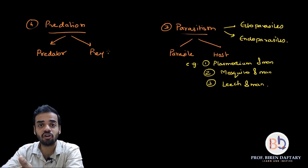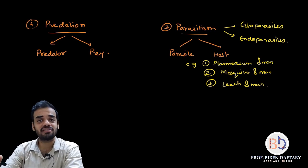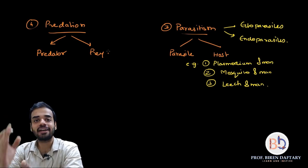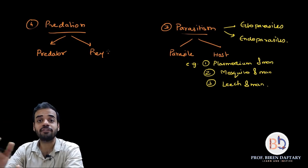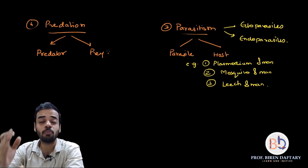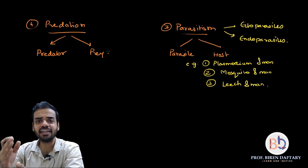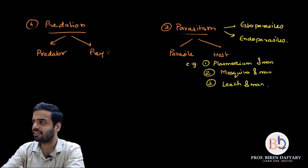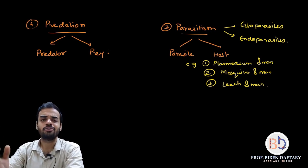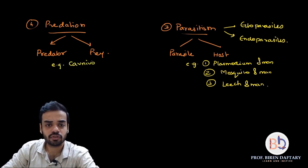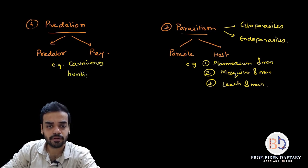The best example is a tiger hunting a deer: the tiger is the predator and the deer is the prey. The key difference between parasitism and predation is that predation normally kills the organism being harmed, whereas in parasitism the parasite harms the host but does not result in death in most cases — death can occur only in extreme cases. Examples of predation include any carnivorous animal hunting a herbivorous animal, such as a cheetah hunting a deer.